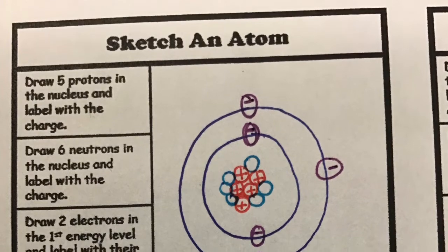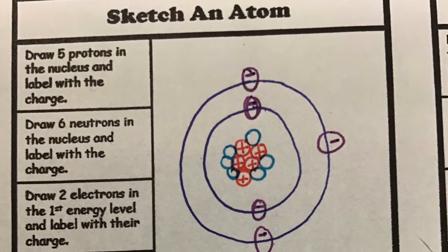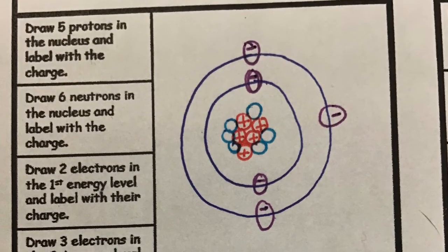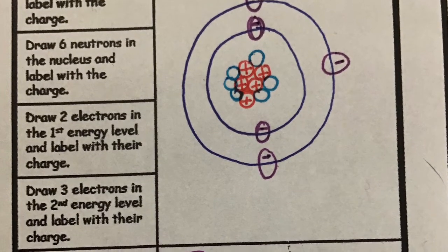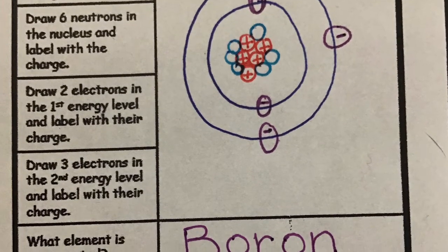We can look at this element's number of protons to determine which element it is. It has five protons. Looking at the periodic table, I am able to see this element is boron.